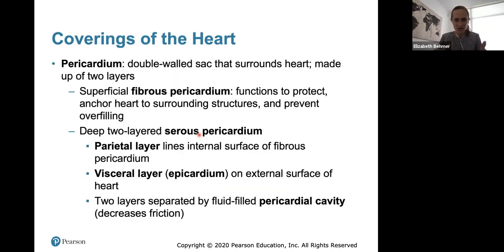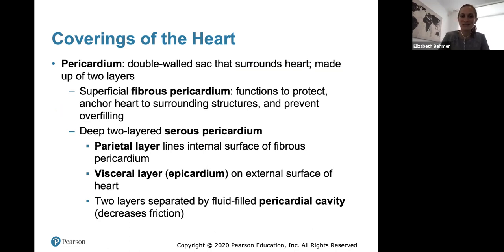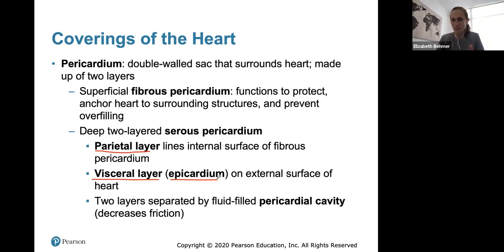You should know the layers of the heart and the walls of the heart. The pericardium is the double-walled sac surrounding the heart, made up of two layers. The superficial fibrous pericardium protects and anchors the heart to prevent overfilling. Then there's a two-layered serous pericardium consisting of the parietal layer, which lines the internal surface of the fibrous pericardium, and the visceral layer on the external surface of the heart. These two layers are separated by a fluid-filled pericardial cavity that reduces friction.